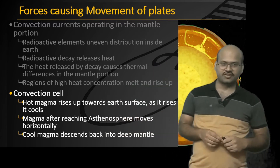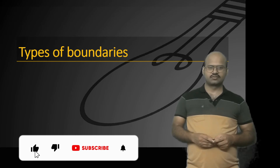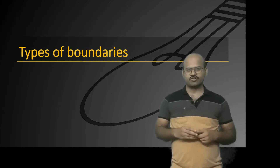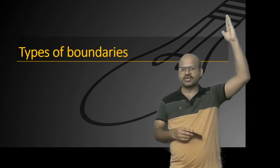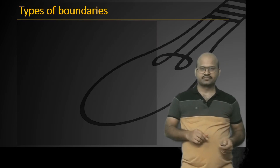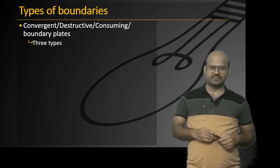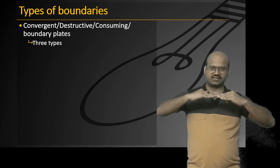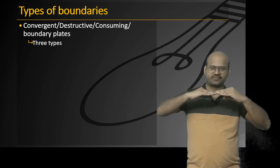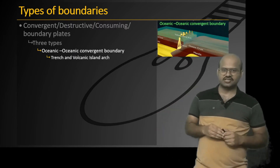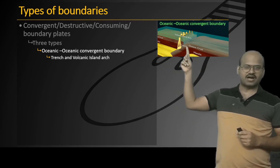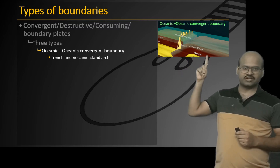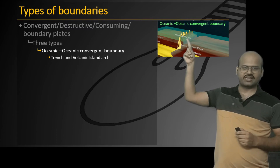Now let's see different types of plate boundaries. Boundaries are classified based on the relative movement of plates. The first is the convergent boundary, where two plates move towards each other. This can be further classified into three types. The first is ocean-ocean convergent boundary, where two oceanic plates move towards each other. At the margin we see formation of a trench, one oceanic plate subducts, volcanic activity occurs, and we see formation of volcanic island arcs.